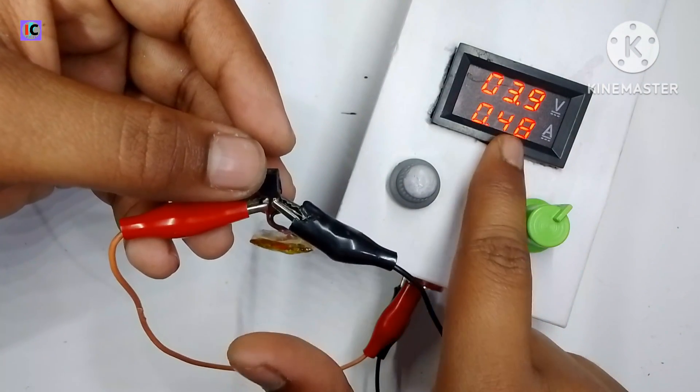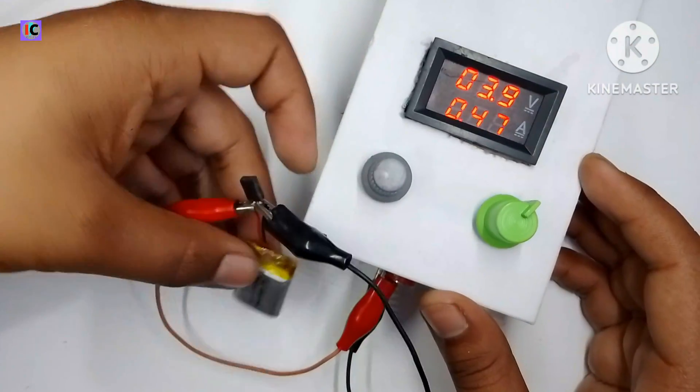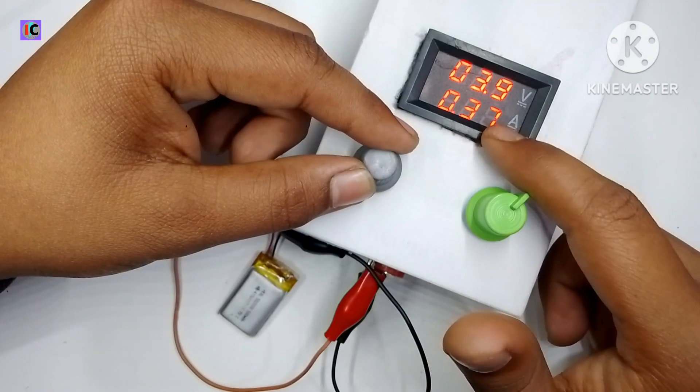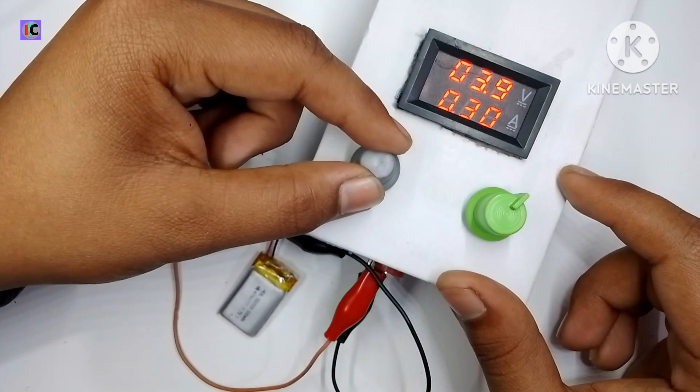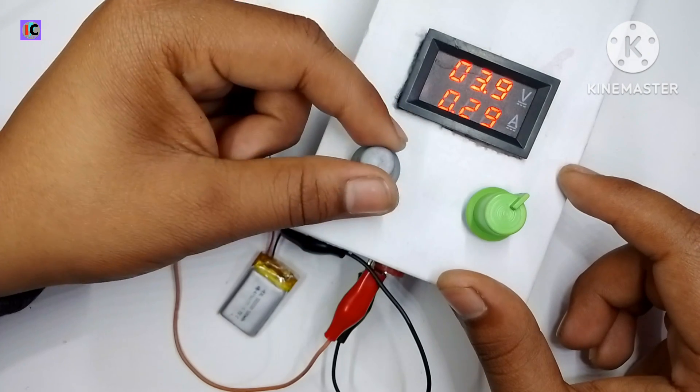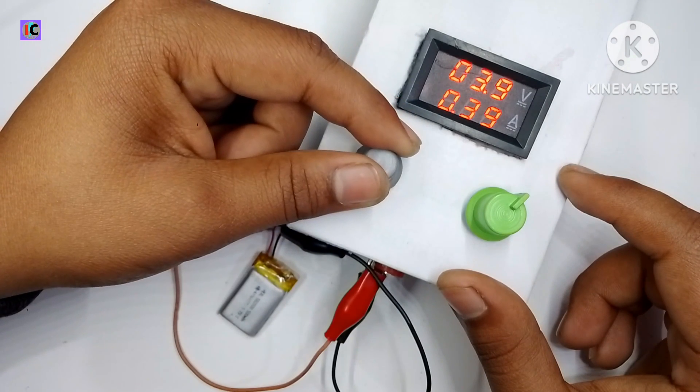Now you can see the maximum current taken by the battery is 0.47 ampere. And you can see I am controlling the output current or the charging current of this battery. So you can adjust the output current as well as the voltage.